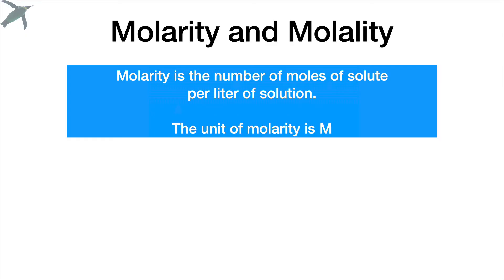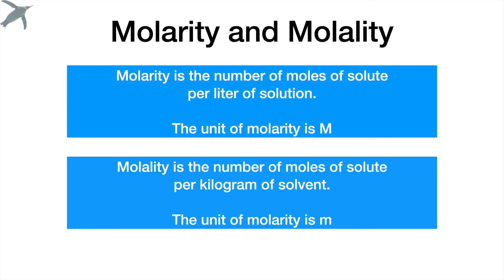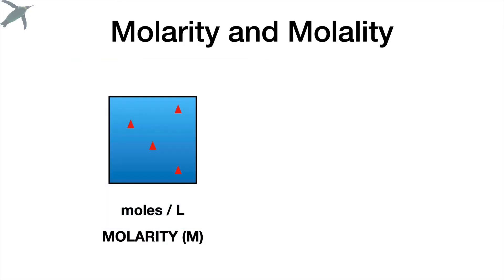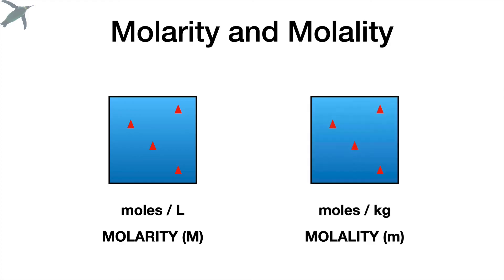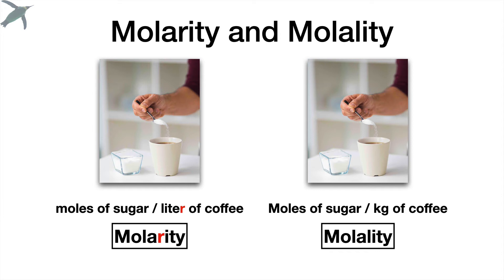Molarity is the number of moles of solute per liter, and we use a capital M to designate that. Molality is the number of moles of solute per kilogram of solvent, and we use a little m for that. Graphically: moles per liter is molarity, moles per kilogram is molality. People confuse these all the time — no wonder, there's only one letter difference. How do you remember them? Think about the letter R in liter and the letter R in molarity. So: molarity and liter. Hopefully that helps you remember it.